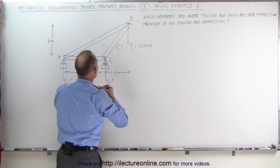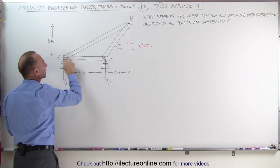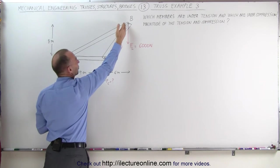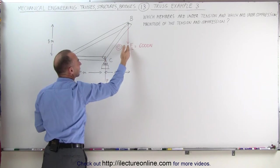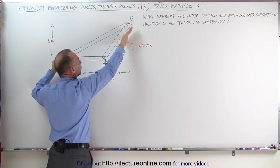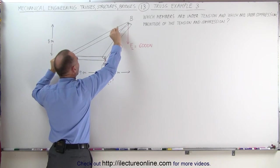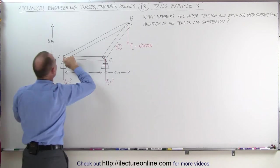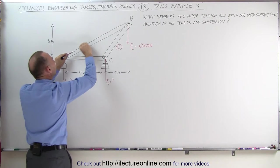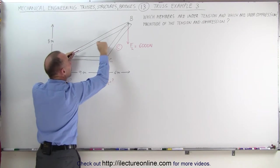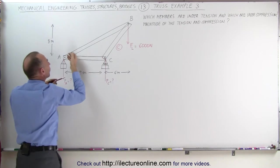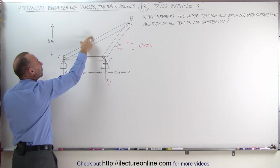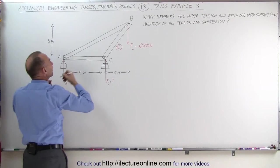Now let's imagine that this pin here was not connected to this beam. As this force comes down, this would rotate in this direction and this beam would be pulled forward. This pin is preventing this beam from moving in that direction, so it's pulling on the beam. That means this beam is under tension.